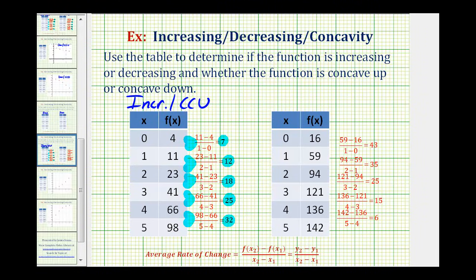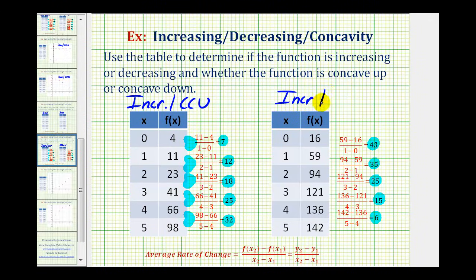For the last table, the rates of change are 43, 35, 25, 15, and 6. These values are getting smaller or decreasing, which means the function is concave down. So this function is increasing and concave down.